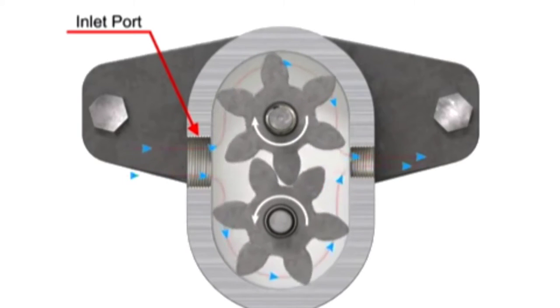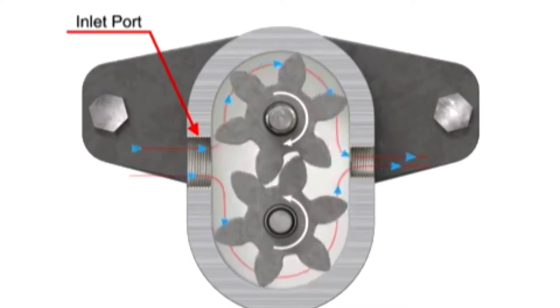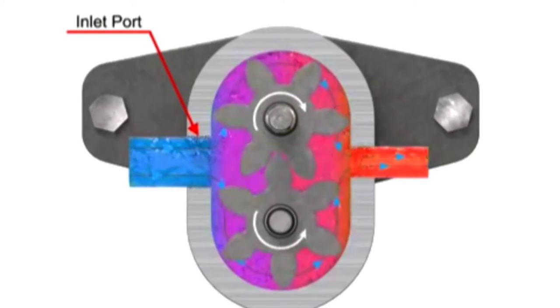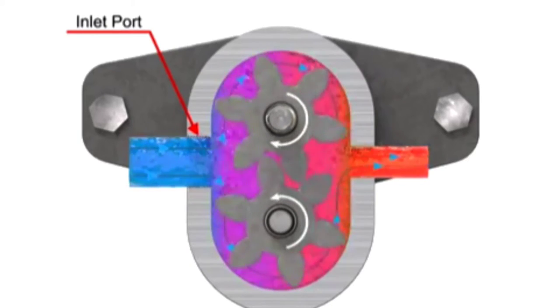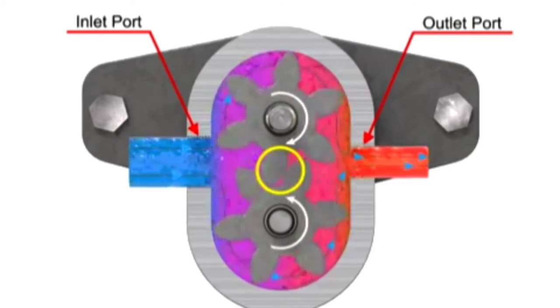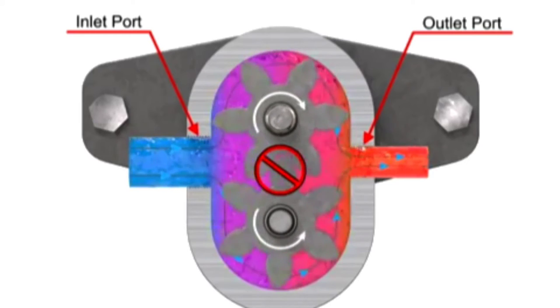As the gears rotate, a flow path is created around the outside of each one. Fluid trapped in the slots between teeth is carried around and discharged into the cavity with the outlet port. Meshing of the teeth in the center of the pump seals the outlet port from the inlet port. No fluid passes between the gears.